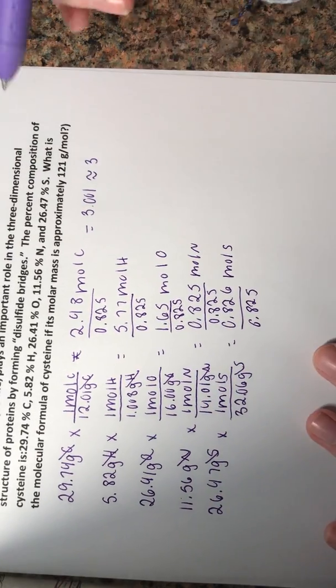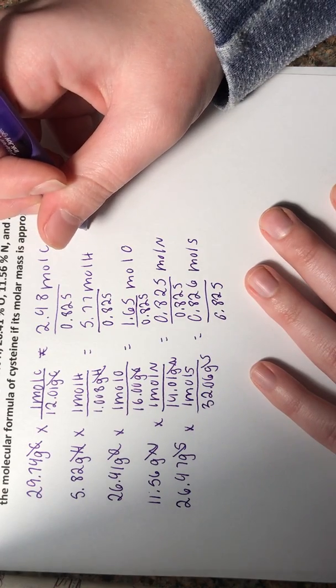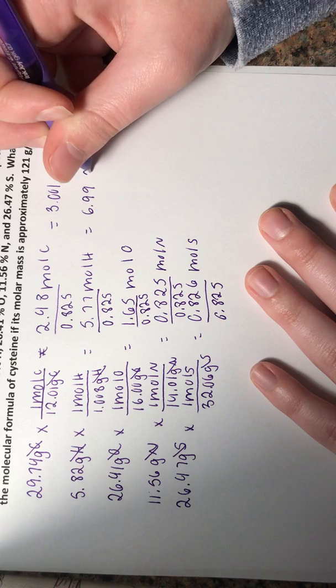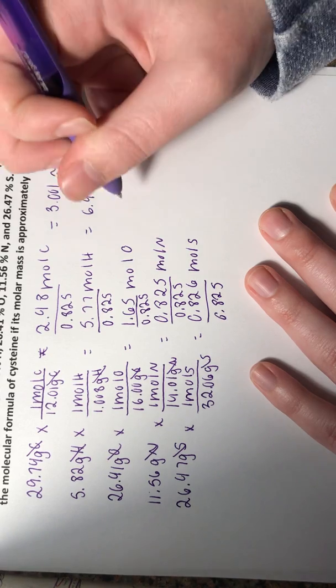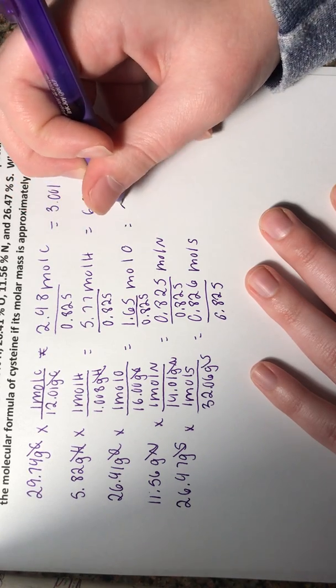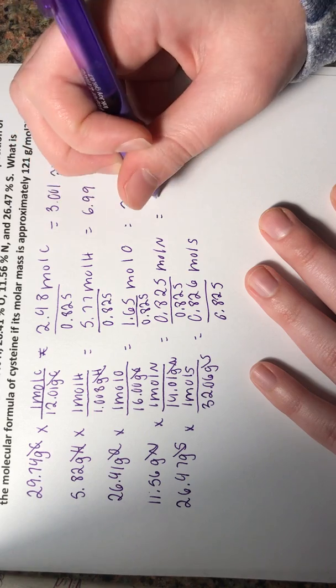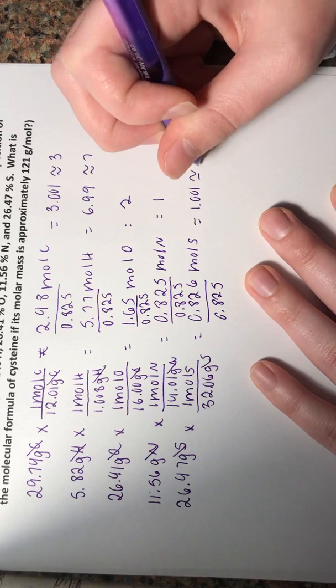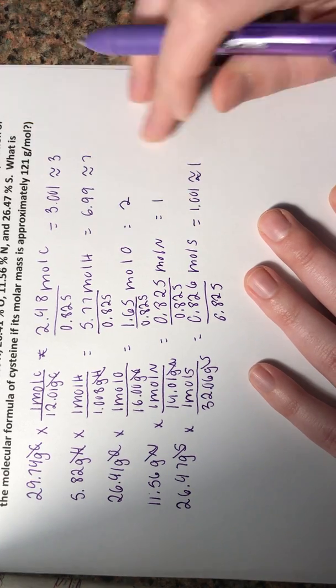That approximation is important for subscripts. So then this is 6.99, which is approximately 7. And this is equal to exactly 2. This is equal to exactly 1. And this is equal to 1.001, so approximately 1.